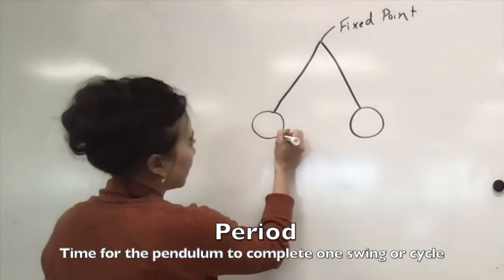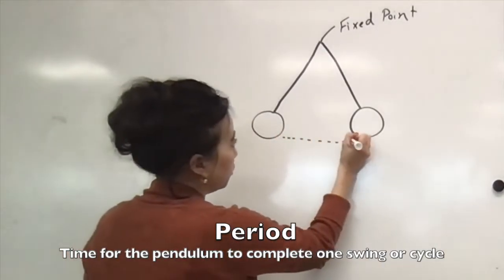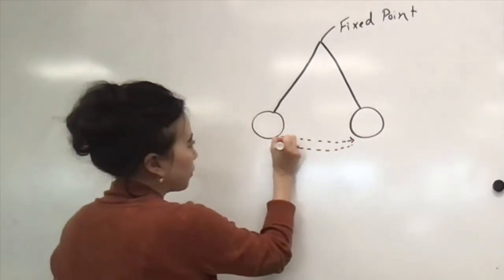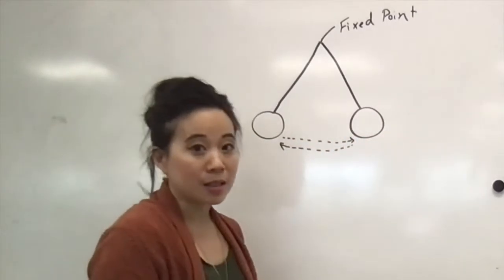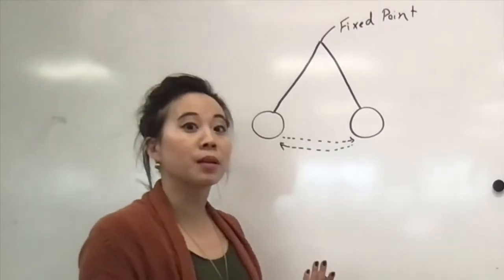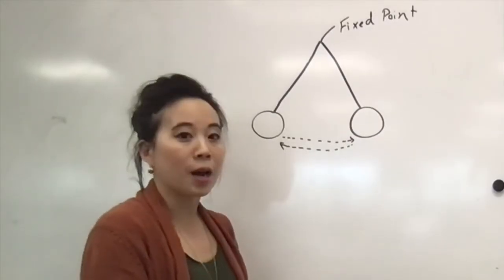One swing is defined as the time it takes for the pendulum to go away from you and to come back. So the away and back is how you would describe the period of a pendulum, or how many seconds it takes for that to happen.